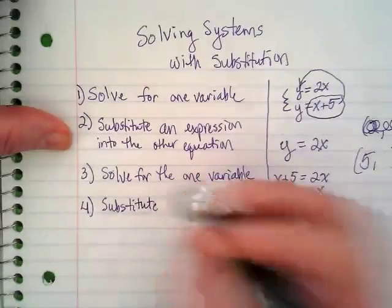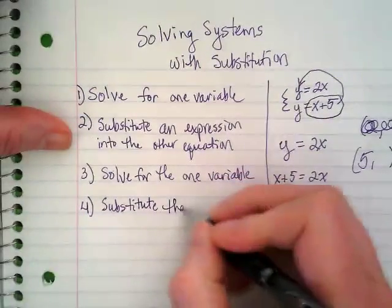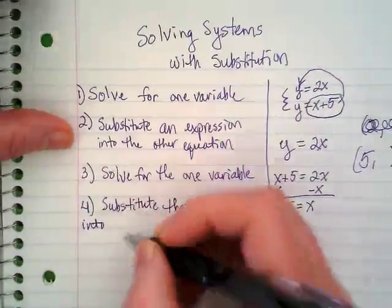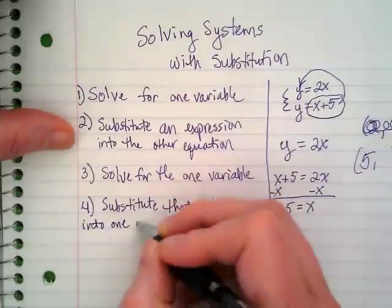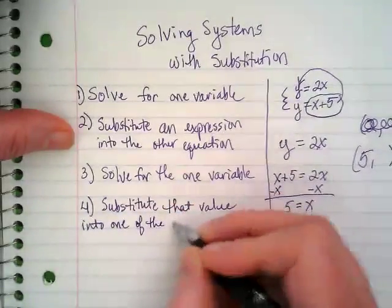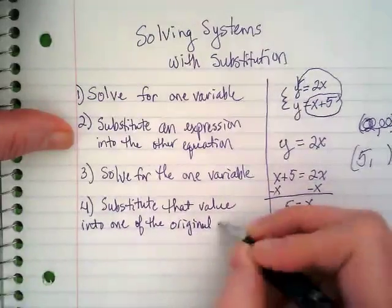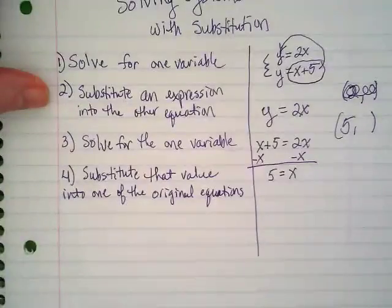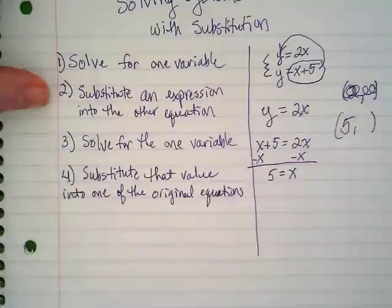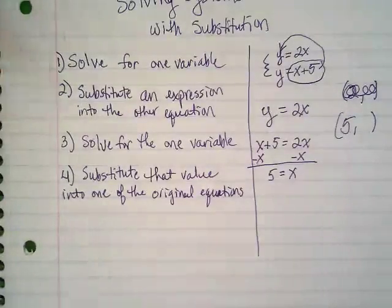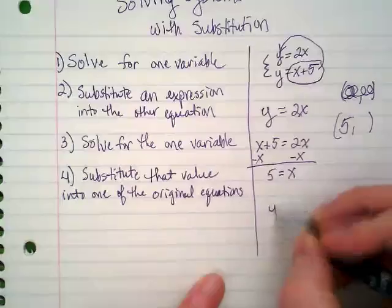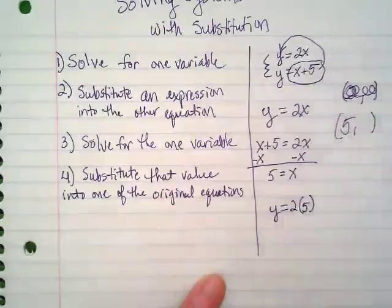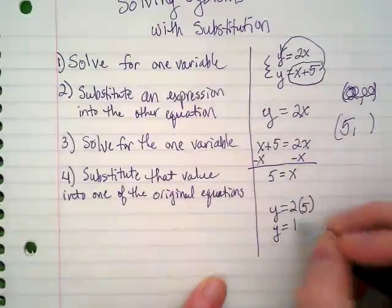Substitute that value into one of the original equations. It doesn't matter which equation. I'm going to choose the first one. y equals 2x. It's going to be y equals 2 times 5. So y equals 10.